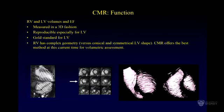For the RV, it is a little bit trickier because of its complex geometry. Unlike the LV, which is quite conical and symmetrical and easier to measure, the RV wraps right around the LV as well, making it more difficult. But at this time, CMR does offer the best method for RV volumetric assessment and is fairly reproducible.